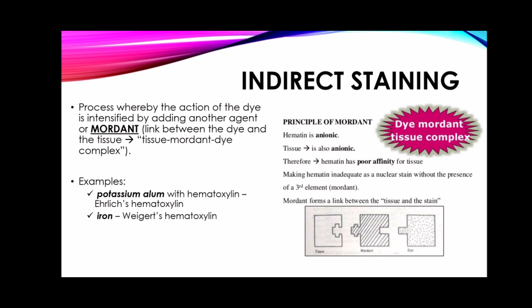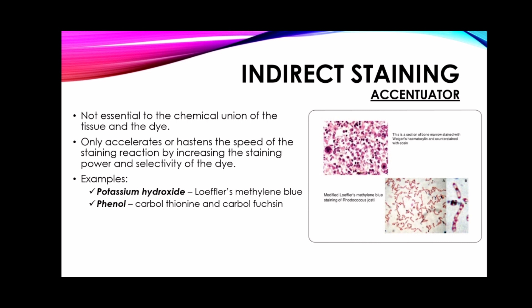An accentuator is not essential to the chemical union of the tissue and the dye. It does not participate in the staining reaction, but merely accelerates or hastens the speed of the staining reaction by increasing the staining power and selectivity of the dye — thus named accentuator, to increase the staining power and accelerate the speed of staining. Examples are potassium hydroxide in Löffler's methylene blue, and phenol in carbol-thionine and carbol-fuchsin.